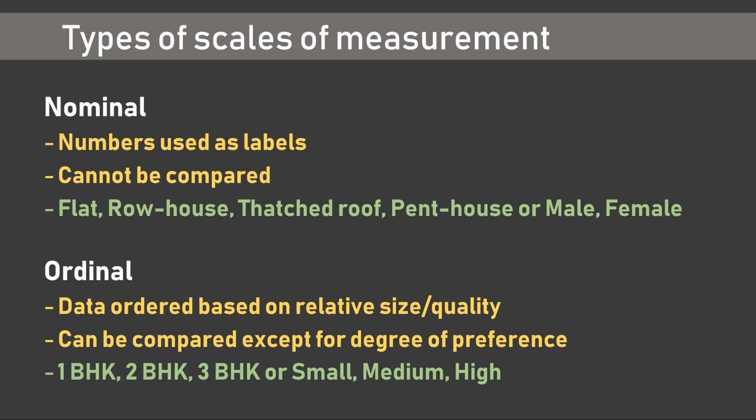The first scale is the nominal scale, where we use numbers as labels. Any scale that uses names of a person, place, or thing as labels is a nominal scale. The responses of such a scale cannot be compared with each other numerically. Examples include type of house — flat, row house, thatched roof, or penthouse — or gender — male or female — which constitute nominal scales of measurement.